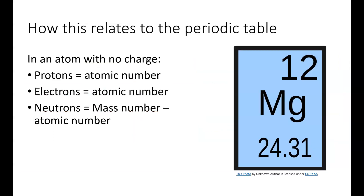If we look at the periodic table, we can actually find the number of protons for each element by finding the atomic number. So the atomic number for magnesium is 12, so the number of protons for magnesium is 12. The number of electrons in an atom are going to be equal to the number of protons, so that's 12 as well. Note that the electrons can change — we'll look at what happens when they change after exam 1. The number of protons cannot.